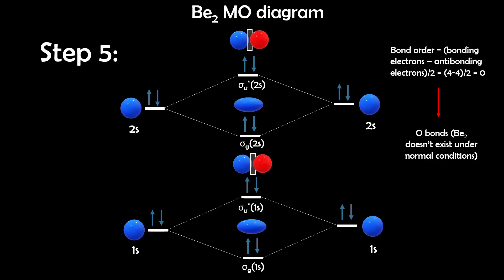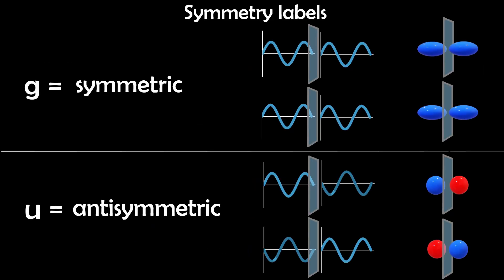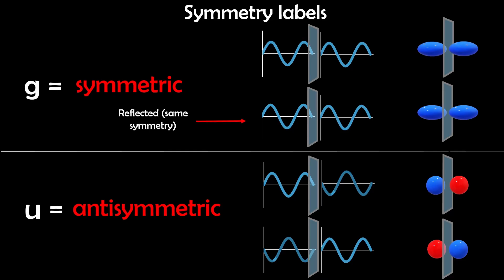Just a side note: the g and u labels only apply to homonuclear molecules. The g (gerade) label means symmetric through the center of a molecule or wave function, while u (ungerade) means anti-symmetric — the wave function changes its sign when reflected through the center.